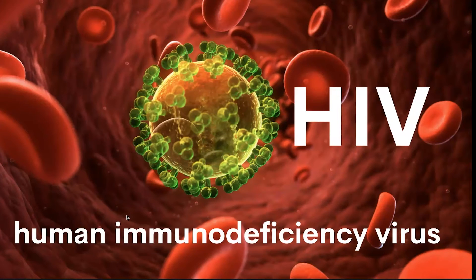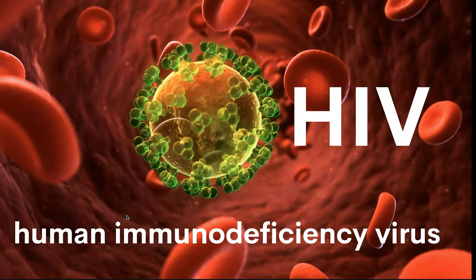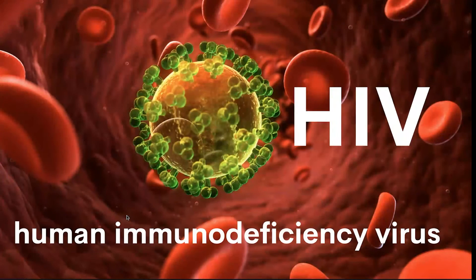HIV is a virus that attacks the body's immune system. If untreated, it progresses to AIDS. People don't die from AIDS itself — they die from opportunistic infections such as pneumonia, because their immune system is so weakened they're susceptible to infections that wouldn't kill others. According to the CDC, HIV in humans came from a type of chimpanzee in central Africa. The chimpanzee version is called simian immunodeficiency virus (SIV). It was likely passed to humans through hunting. Studies show HIV may have jumped from chimpanzees to humans as far back as the late 1800s, and slowly spread across Africa and later the world.